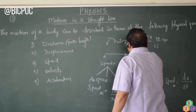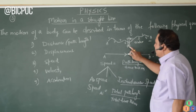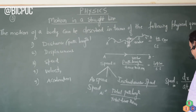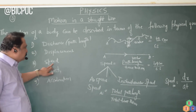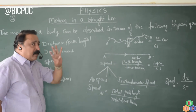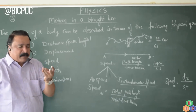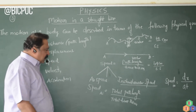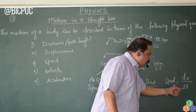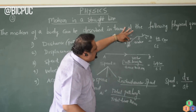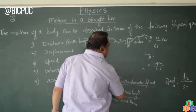dx is a very small distance traveled during that instant, and dt is the small time taken to travel that distance. The ratio dx by dt gives instantaneous speed. To summarize speed: speed is path length divided by time taken, and there are four types — uniform speed, variable speed, average speed (total path length by total time taken), and instantaneous speed (dx by dt).